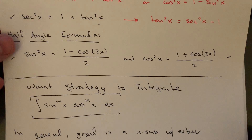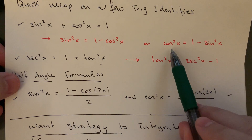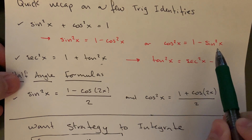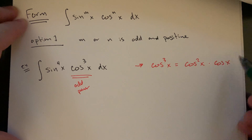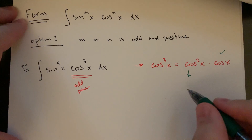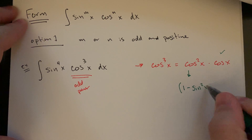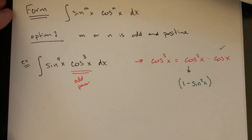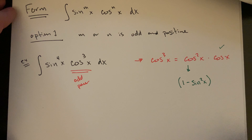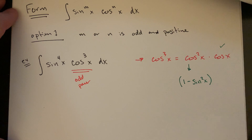Then, from our Pythagorean identity rearranged, cosine squared is the same thing as one minus sine squared. So break your cosine cubed up so that you've got one cosine by itself, and then cosine squared becomes one minus sine squared x. The move is to rewrite the integral so that you have one cosine at the end to act as your derivative — your du — and everything else is in terms of sine.